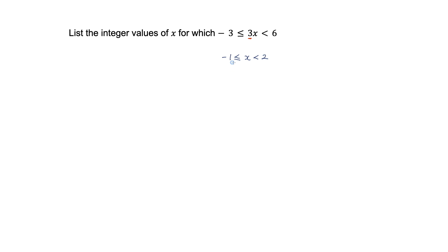This tells us the integer values: x must be less than 2 but greater than or equal to negative 1. So the values are negative 1, 0, and 1.